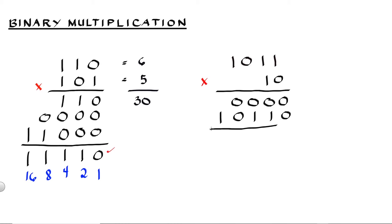Then proceed to addition. We have 0 added to 0 is equal to 0. 0 added to 1 is equal to 1. 0 added to 1 is equal to 1. 0 added to 0 is equal to 0. And bring down 1. So our product is 1, 0, 1, 1, 0.